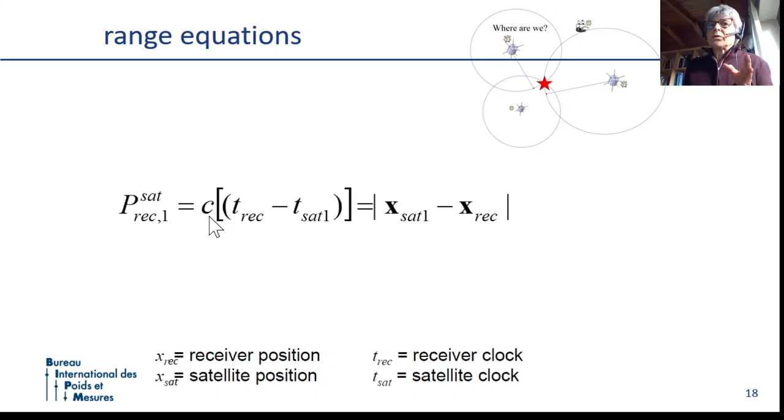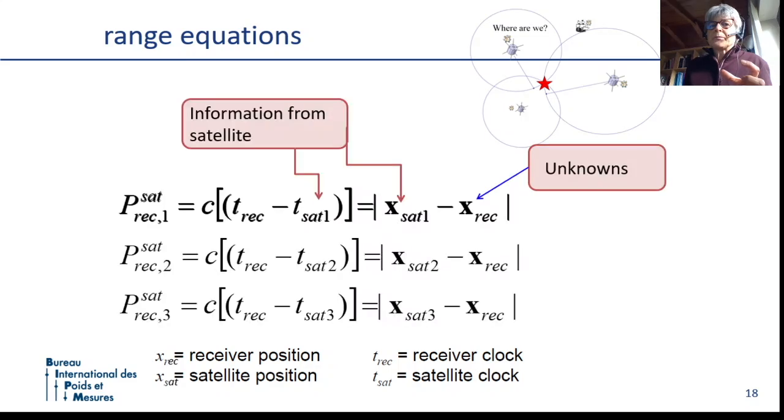We multiply by the velocity of light and we obtain a pseudo-range, a distance, which is the distance between the satellite and the receiver. This is a three-dimensional quantity. So we measure three clocks and we can write three equations where the unknowns are the three coordinates of the receiver. We need to know the satellite position and this comes in the navigation message.